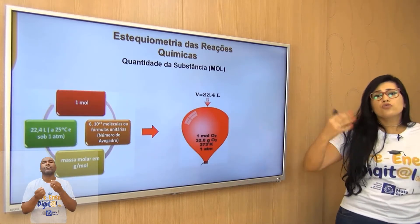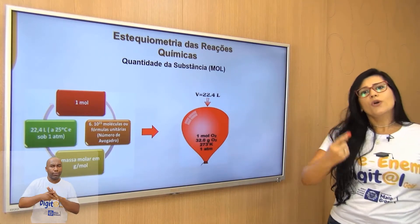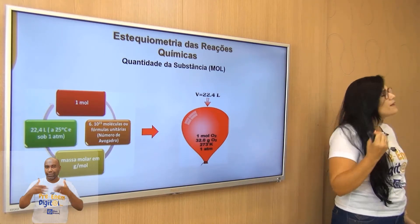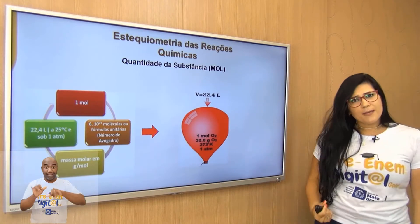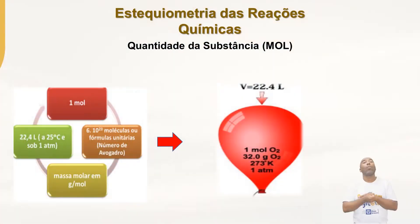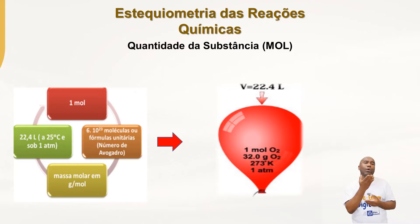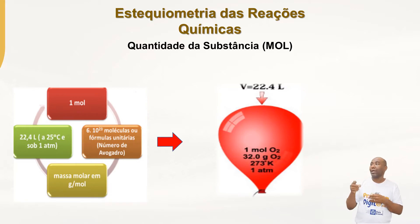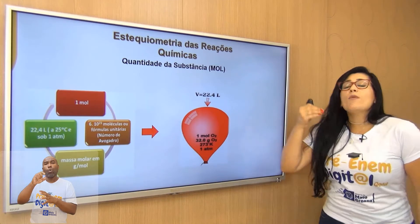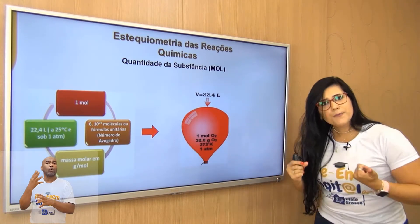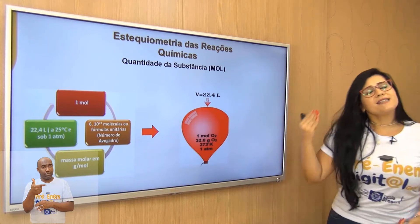Para trabalhar estequiometria, tenho que lembrar alguns conceitos importantíssimos. O primeiro deles é mol. O que é mol? Mol significa quantidade. Quantidade do quê? Depende do que você quer. Se eu for pensar em quantidade de moléculas, um mol de qualquer composto, de qualquer substância, significa que eu tenho ali 6,02 × 10²³ moléculas de qualquer substância. Se nesse balão eu tiver um mol de gás oxigênio, O₂, quantas moléculas de O₂ eu vou ter? 6,02 × 10²³ moléculas.